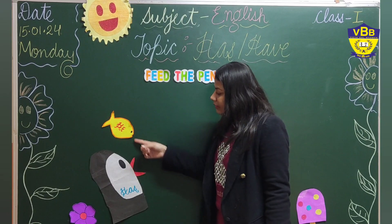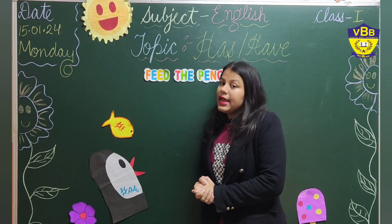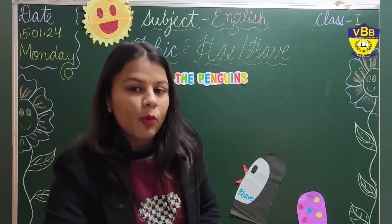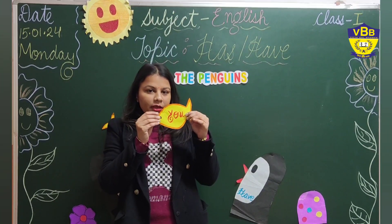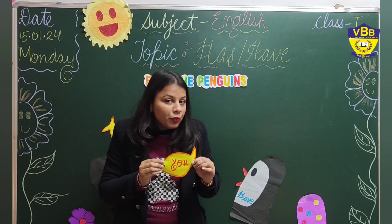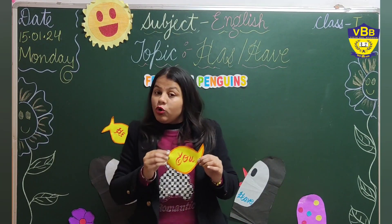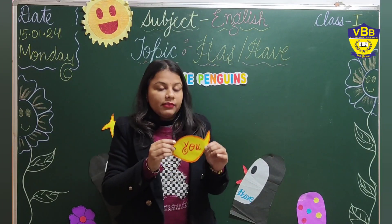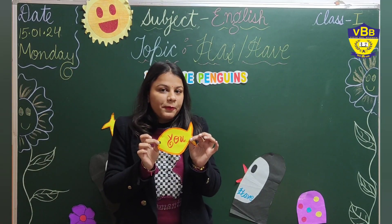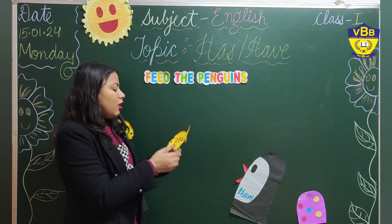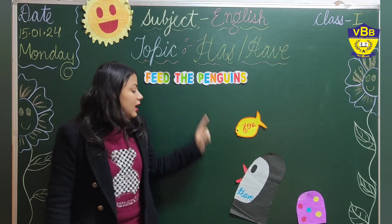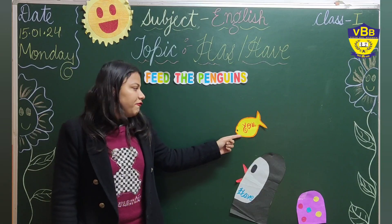Now let's move to one more example. Can you read what is written here? 'You.' And 'you' means we don't know how many people there are, so it is plural. So which penguin will eat this fish? Yes, the 'have' penguin. So we will paste the word 'you' there — the 'have' penguin is eating the fish 'you.'